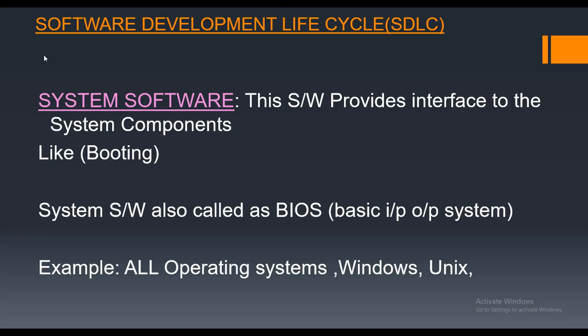This kind of software connects hardware to hardware. Whether it's a computer, a laptop, or a pen drive — all are hardware. To create connectivity between two hardware components, we need software. Examples of system software include BIOS, booting software, operating systems, and drivers — anything which creates a path between two hardware components or between a human and a hardware component.